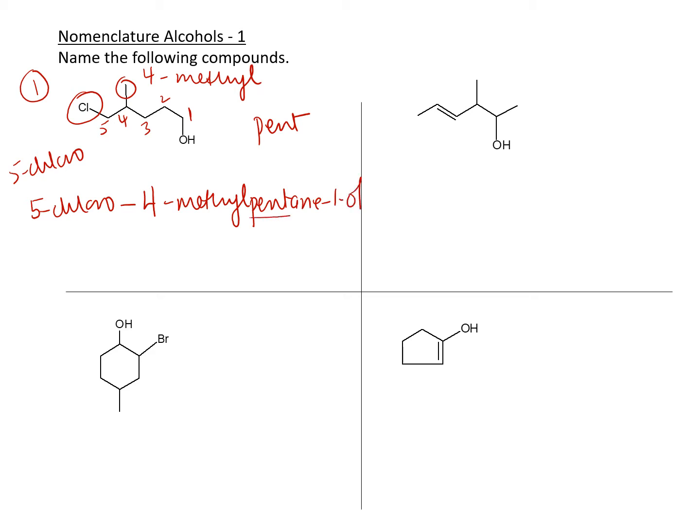The pent tells us that we have five carbons, the 1-ol tells us the location of the alcohol. You do have to number the 1 to show where the alcohol group is.